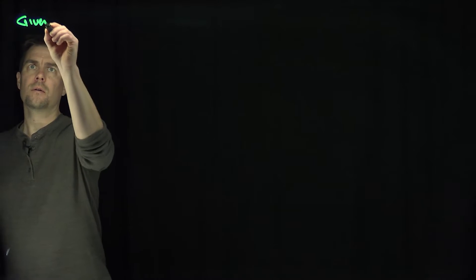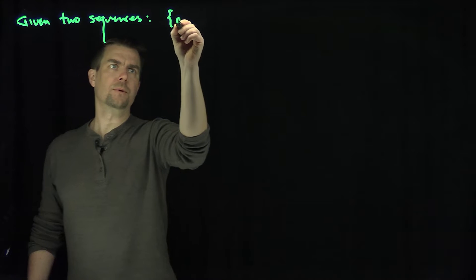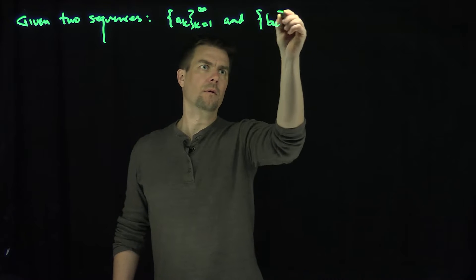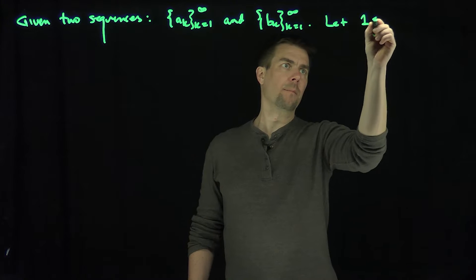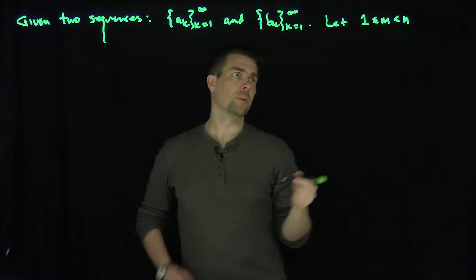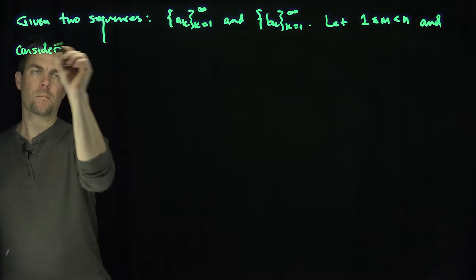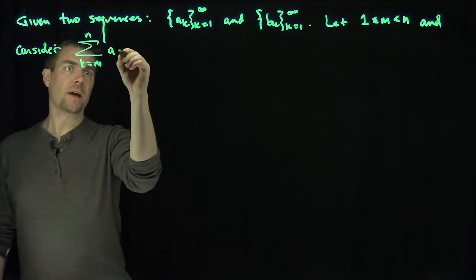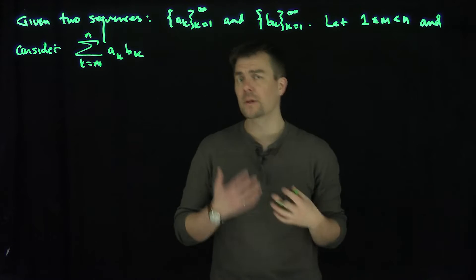Hello students. In this video we'll discuss summation by parts. Let there be given two sequences: a_k for k from 1 to infinity, and b_k for k from 1 to infinity. Let 1 < m < n be any two natural numbers, and consider the sum of a_k * b_k for k from m up to n. We want to develop a tool for finite sums that is similar to integration by parts.